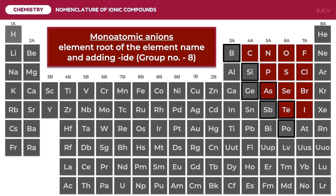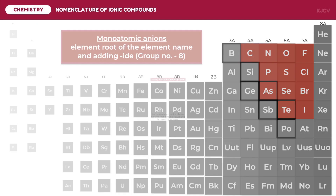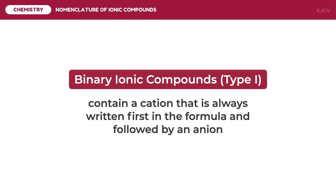Once we combine the type 1 cations and monoatomic anions, we have the type 1 binary ionic compounds. These compounds contain a cation that is always written first in the formula and followed by an anion. Let us practice writing and naming type 1 binary ionic compounds.